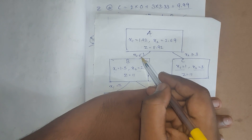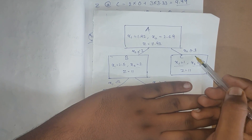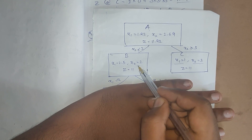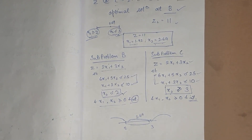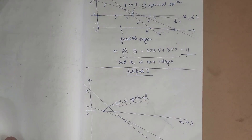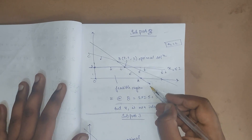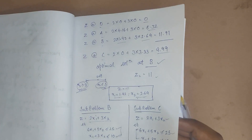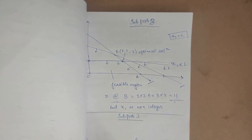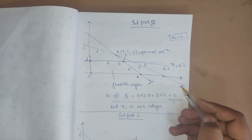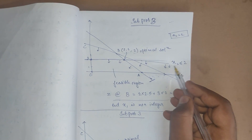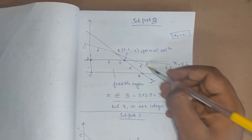For subproblem B, where x2 ≤ 2, we keep the original two constraints — 6x1 + 5x2 ≤ 25 and x1 + 3x2 ≤ 10 — and add the new constraint x2 ≤ 2. The direction of the feasible region for x2 ≤ 2 is towards this side, giving a new common feasible region.